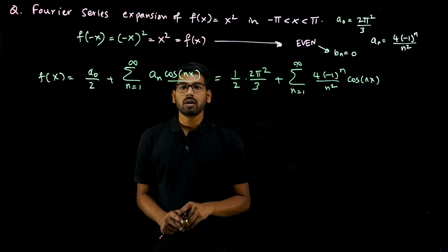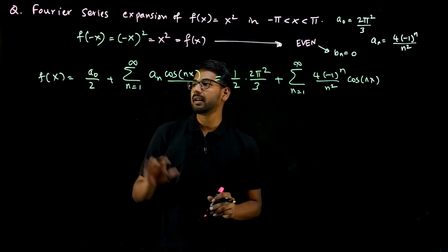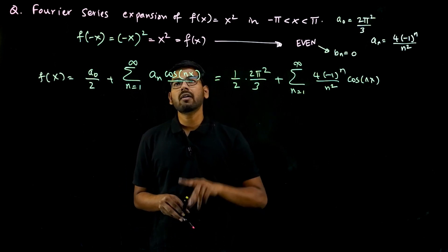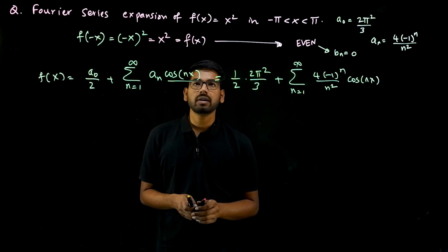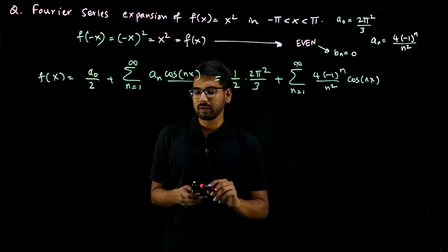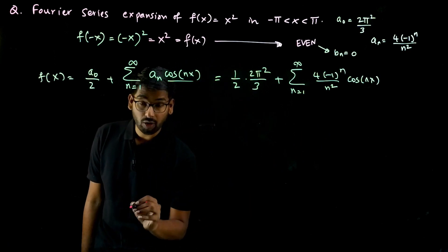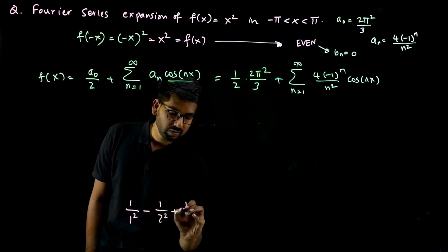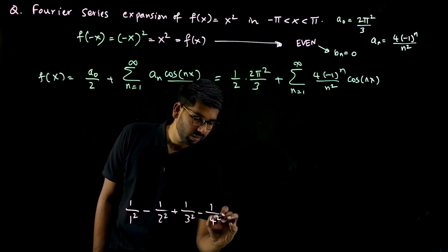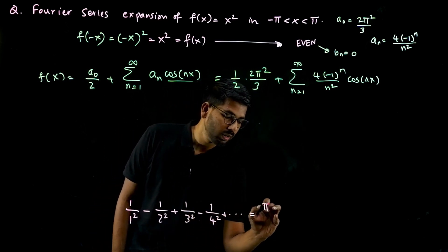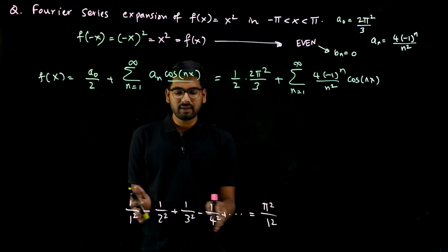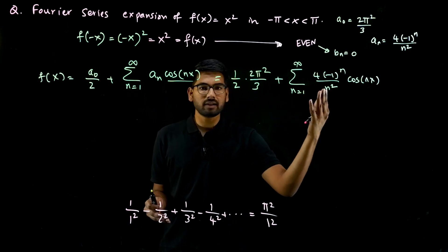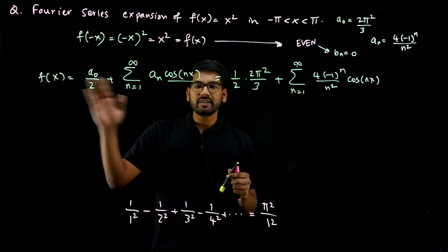This is the Fourier series expansion of f of x. But the question is not over yet — they have also asked us to show that 1 over 1 squared minus 1 over 2 squared plus 1 over 3 squared minus 1 over 4 squared, and so on, equals pi squared by 12. We need to show this using the Fourier series result.